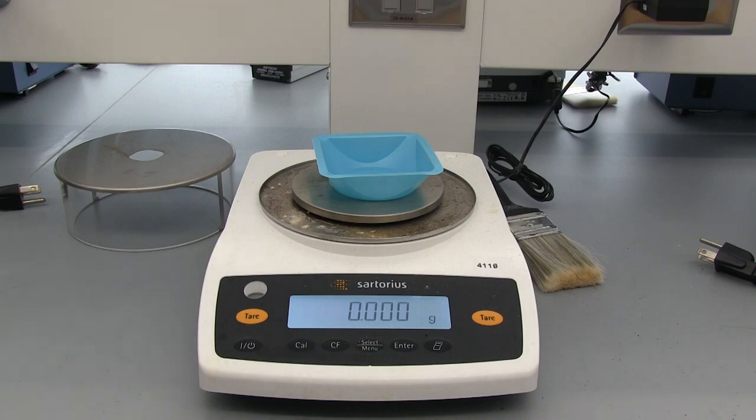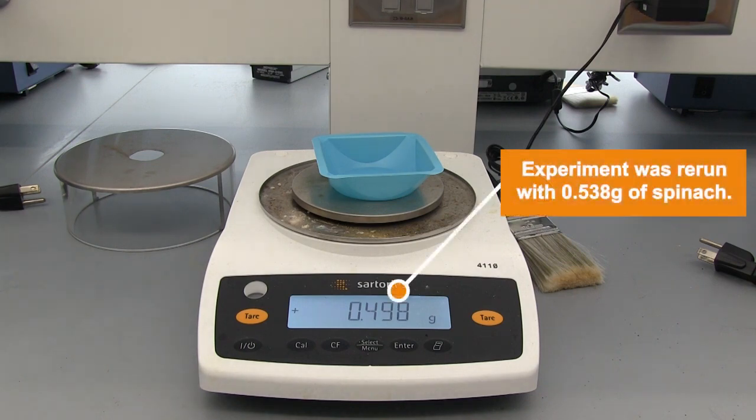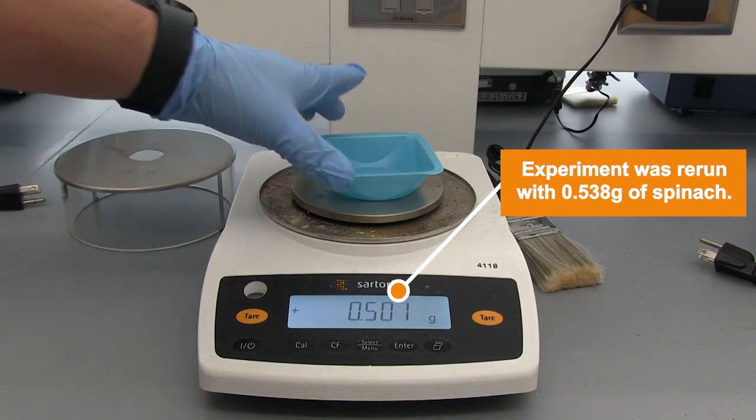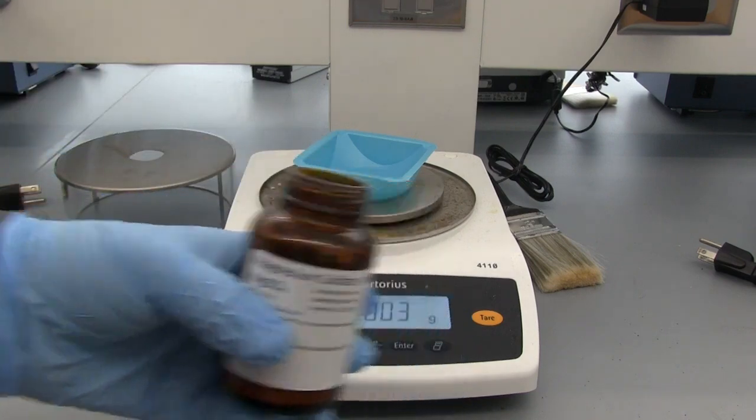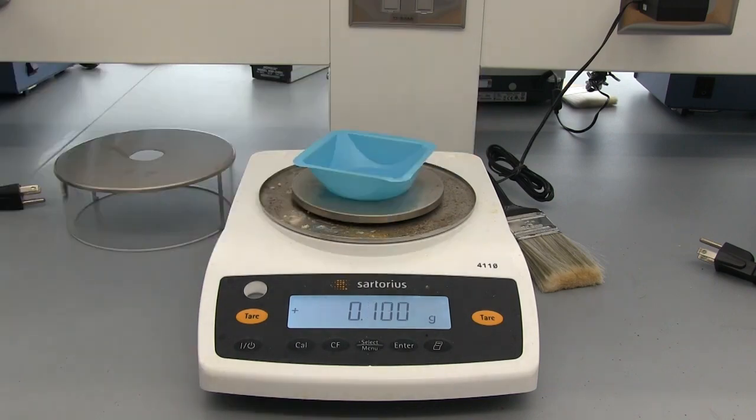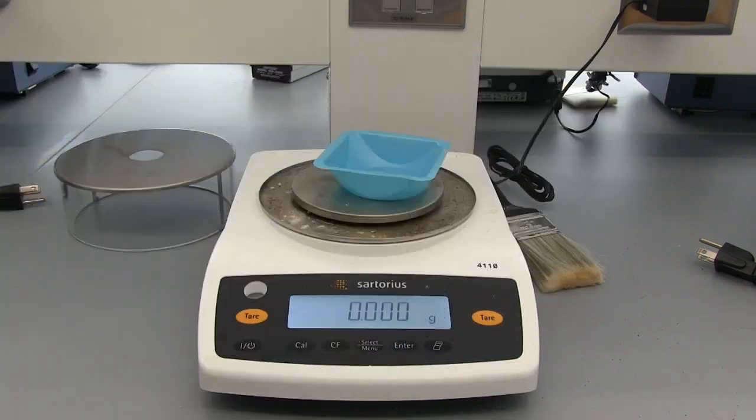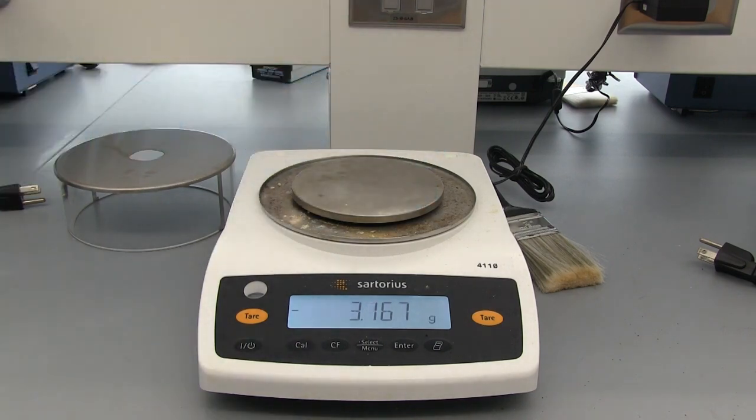The first thing we're going to get is 0.5 grams of spinach, so we'll go ahead and weigh that out. We'll go with exactly 0.5 grams. Now we'll get 0.5 grams of our anhydrous magnesium sulfate. Now we need a gram of our sea sand. I'm going to tare it out. We'll go with 1.008 grams, and now we will combine this all into a mortar and pestle and begin to break down our spinach.